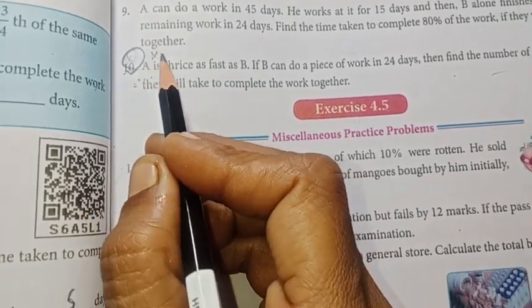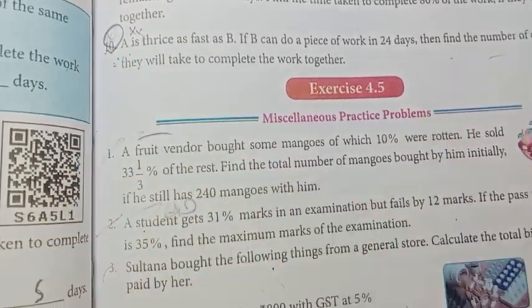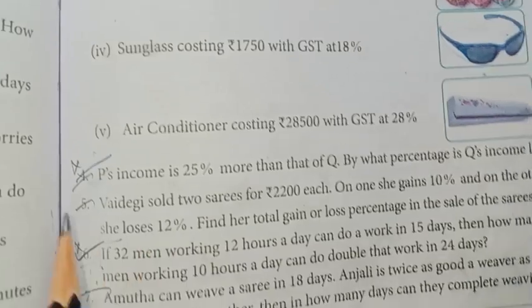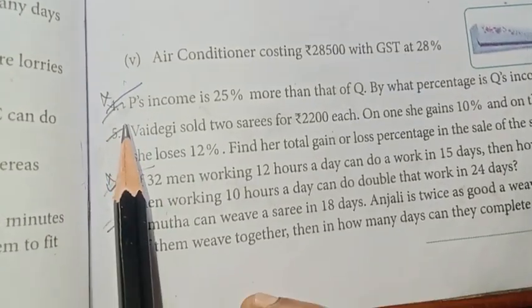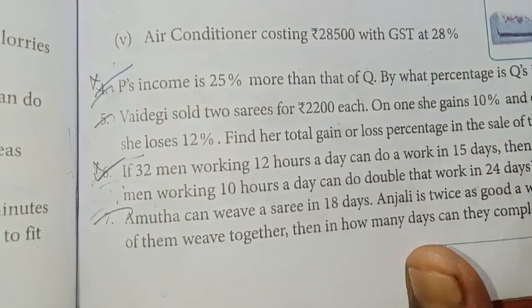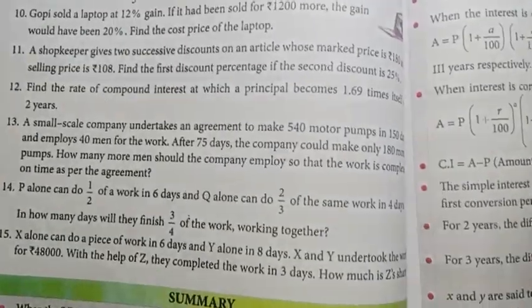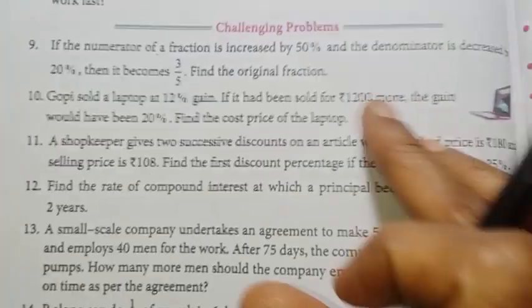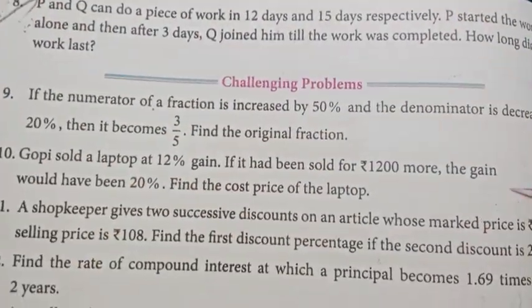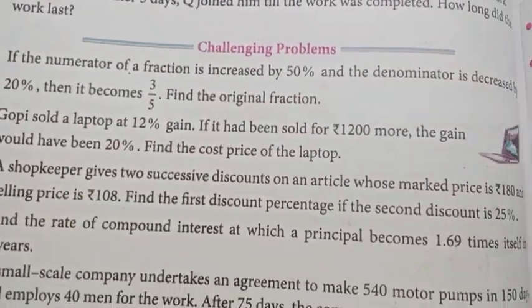In exercise 4.5, questions 4, 5, 6, and 7 are important questions. Page number 152: question 8.1 important.